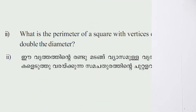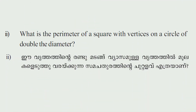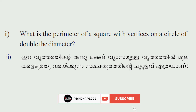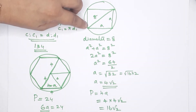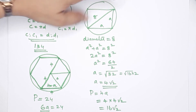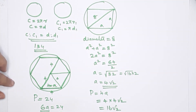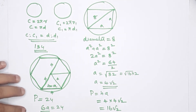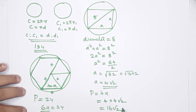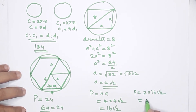Question: What is the perimeter of a square with vertices on a circle of double the diameter? The diameter is now double, so it equals 16. The perimeter will automatically scale by the same factor — it doubles. So the perimeter equals 2 times 16√2, which equals 32√2.